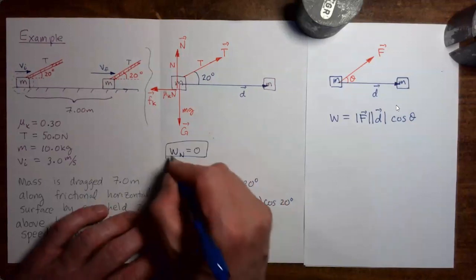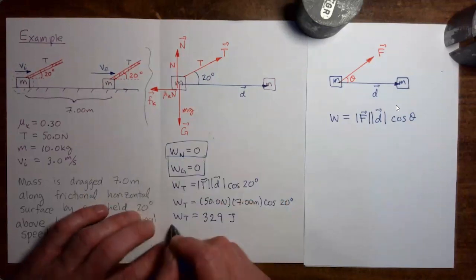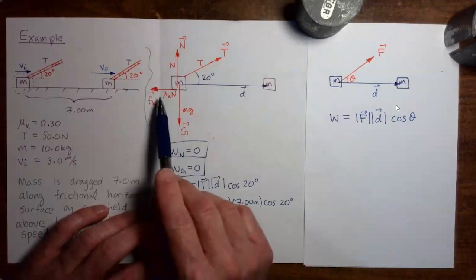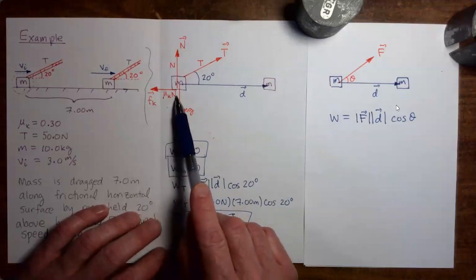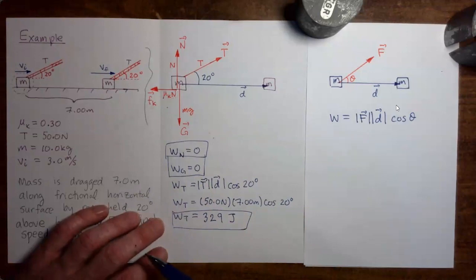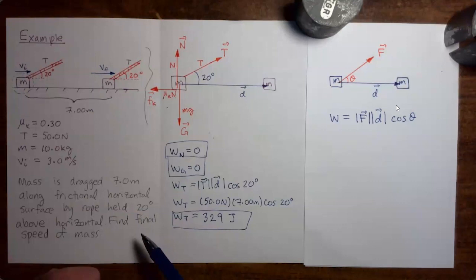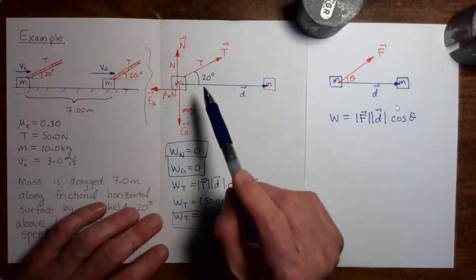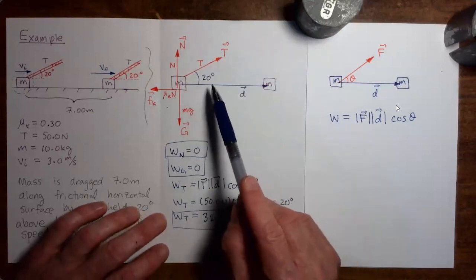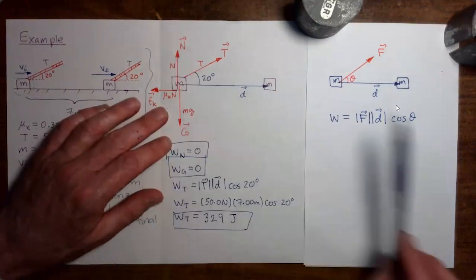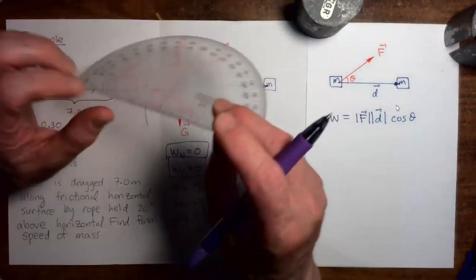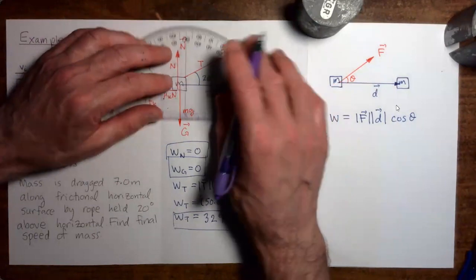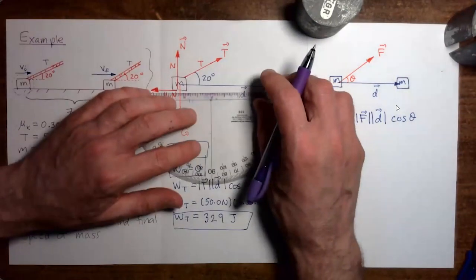So we have the work done by the normal force, work done by gravitational force, and work done by tension. Now we need to find the work done by the frictional force. Notice that in order to calculate the frictional force, we're going to need the strength of the normal force. To get the strength of the normal force, we're going to have to apply Newton's second law along the vertical direction. So this is actually going to take us back to Newton's second law of motion before we can complete our problem using the work-kinetic energy theorem.